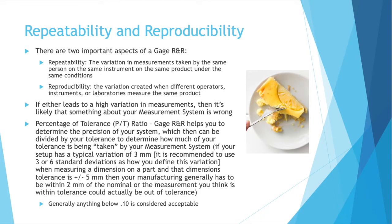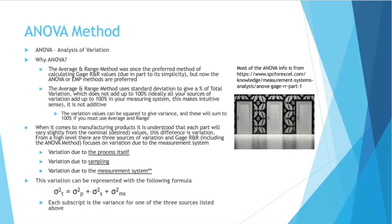For example, if your measurement setup has a typical variation of 3 millimeters and the dimension has a tolerance of plus or minus 5 millimeters, after subtracting the variation of your measurement system you only have 2 millimeters of wiggle room. How much of your total tolerance is being eaten up by the measurement system? That's how I view the PT ratio — and of course you want to keep the variance due to your measurement system to a minimum.